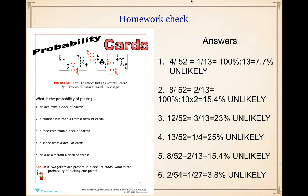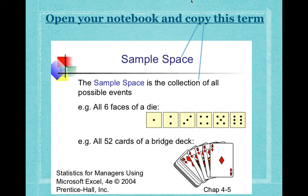Hopefully everyone is doing alright. Now let's move on with some other things we need to do for today. Please open your notebook and look at this sample space. The title is 'sample space' and what it means: the sample space is the collection of all possible events. For example, all six faces of a die — one, two, three, four, five, six — or all fifty-two cards of a bridge deck.